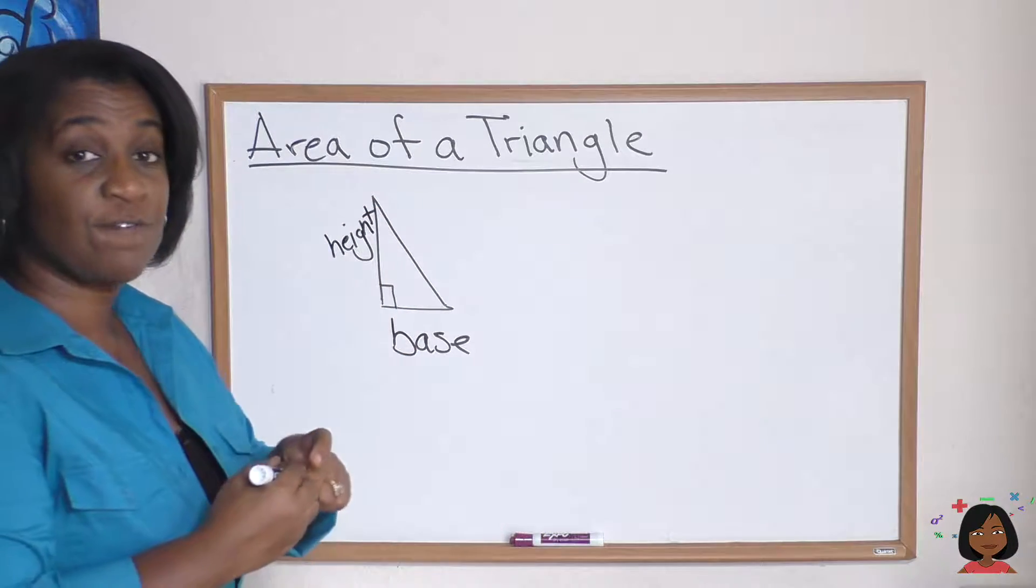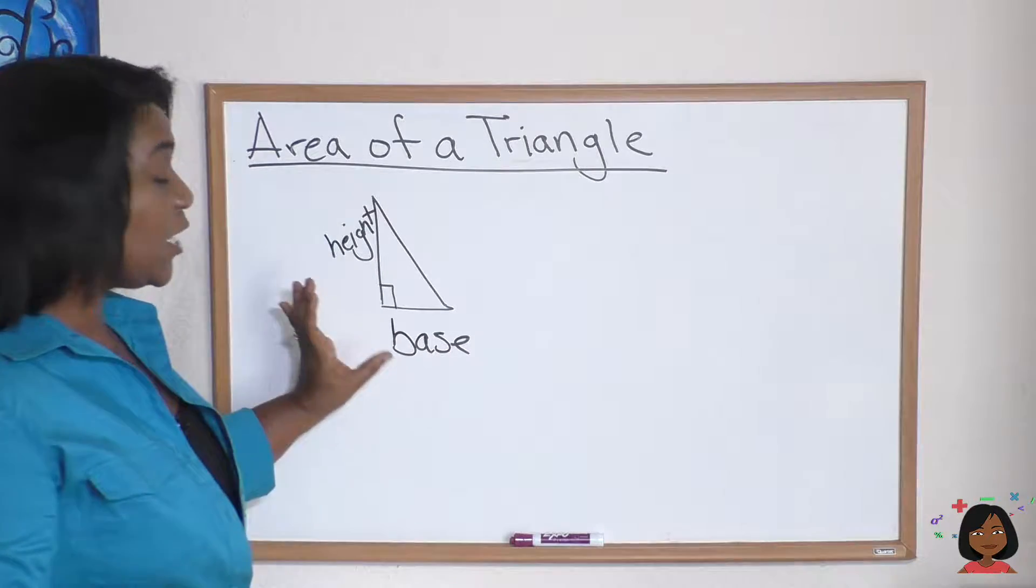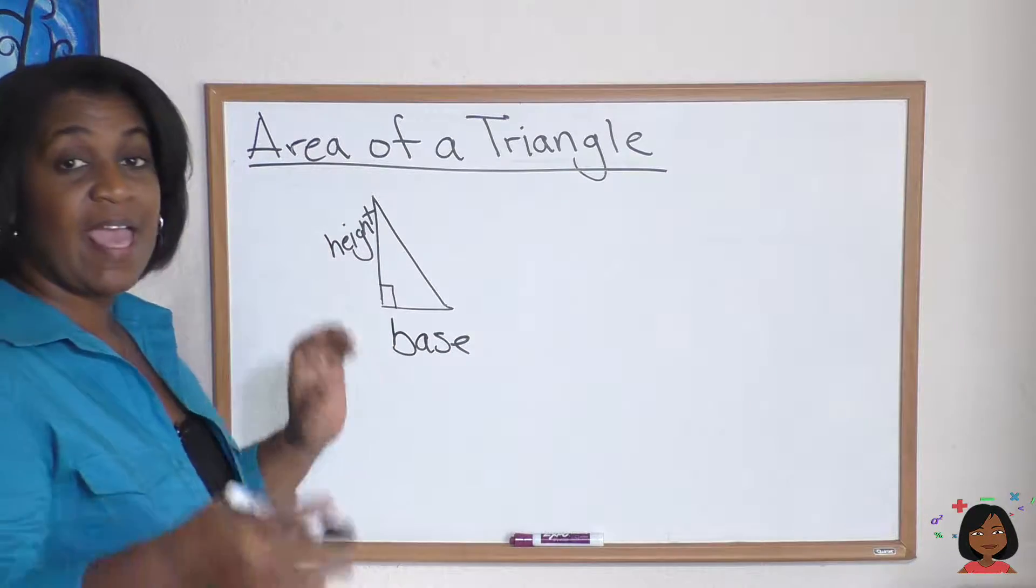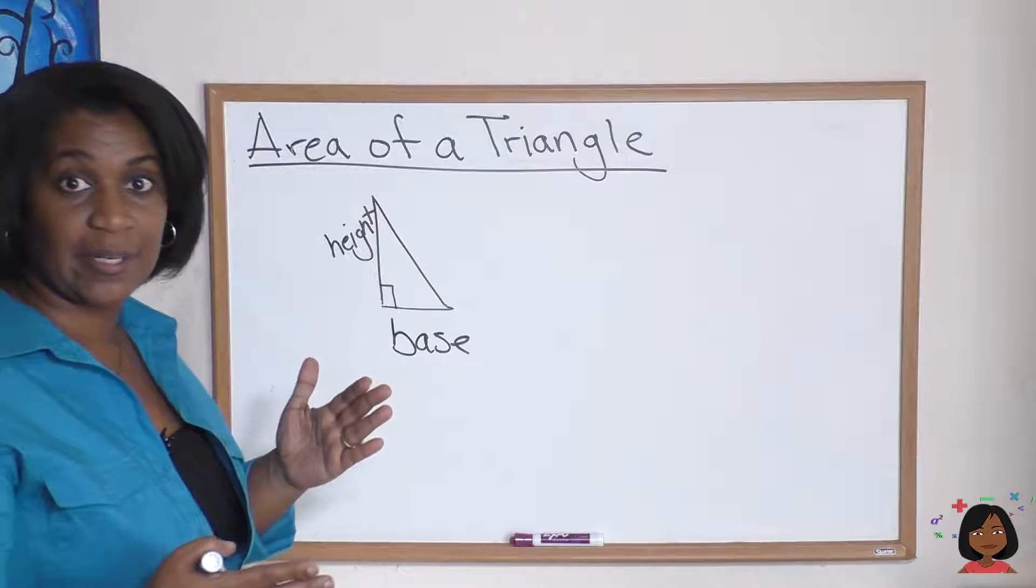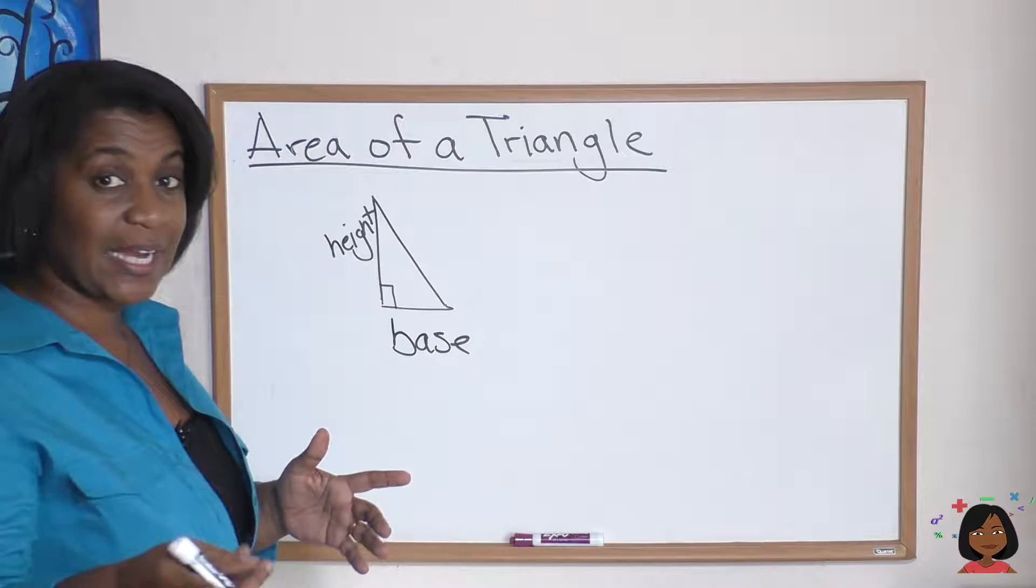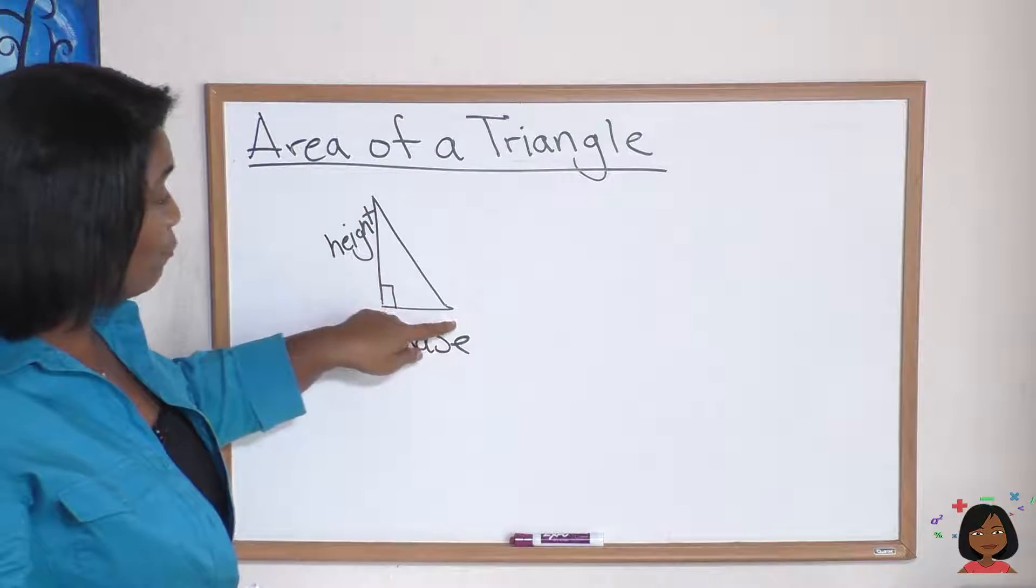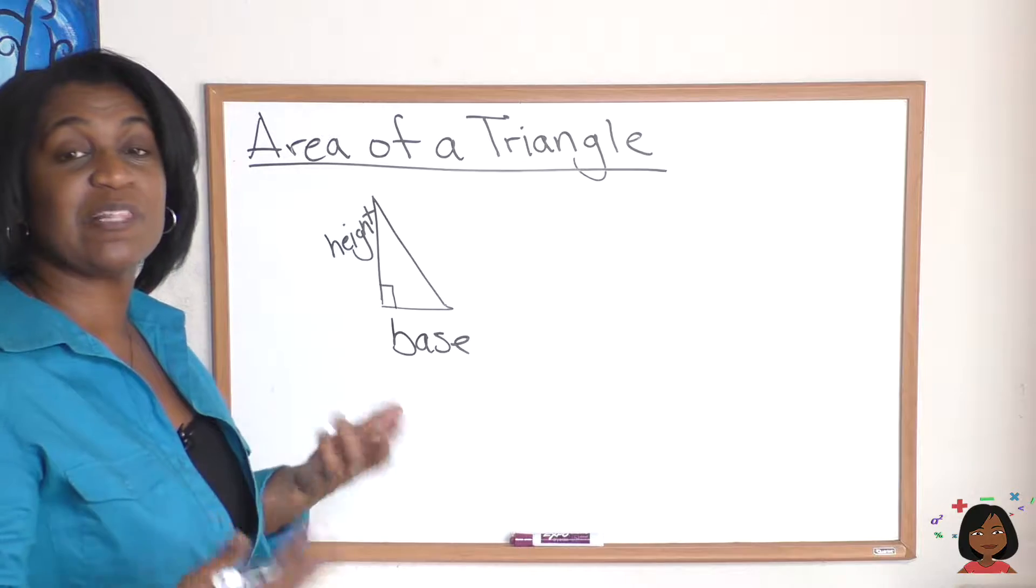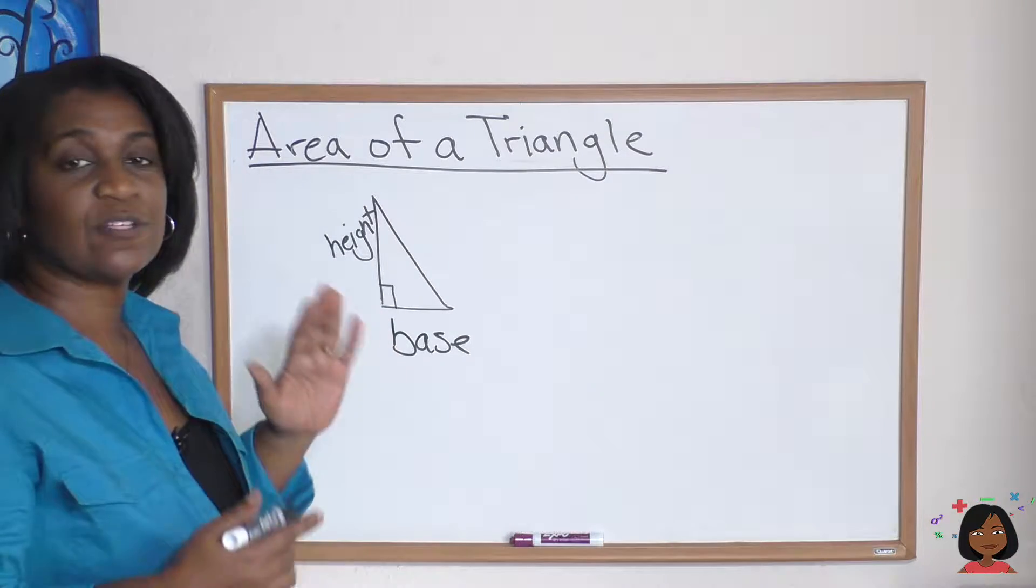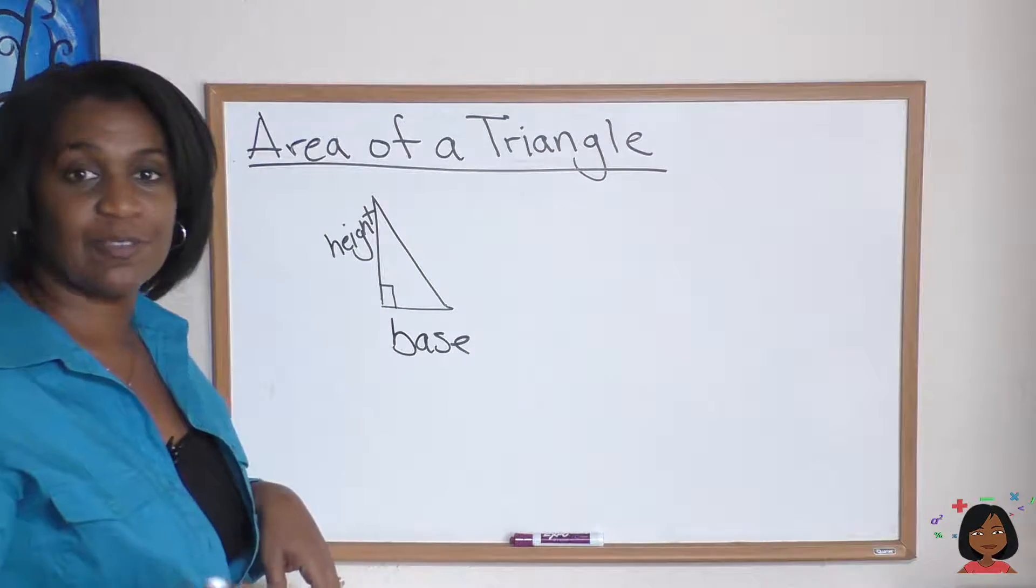Now one thing to keep in mind is that this formula I'm about to give you includes the base and the height, and the height always comes from lines that are perpendicular. If you remember, perpendicular lines form a right angle. So we're always going to be looking for the height that is formed by two perpendicular lines.